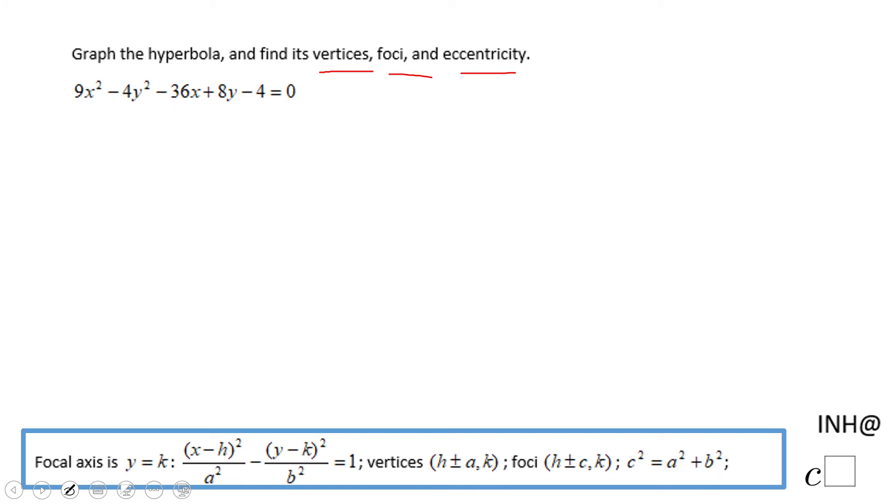Let's see how we do that. We're going to rearrange first: 9x² - 36x - 4y² + 8y - 4 = 0. So we arrange based on x and y terms.